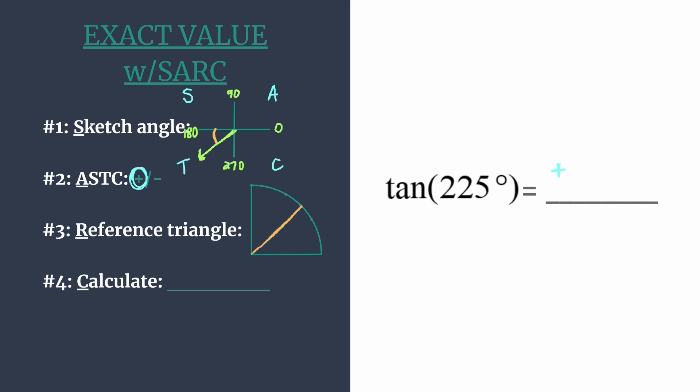So we're working with our special right triangle that's a 45-45-90 triangle and we're going to draw it here in the first quadrant because we've already decided that our final answer is positive, so no need to deal with negative signs in our calculations.